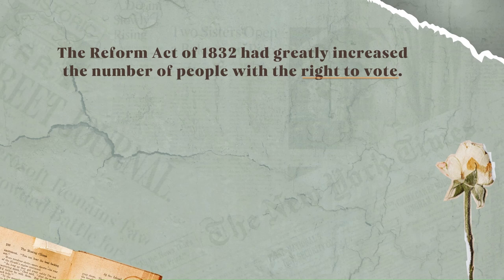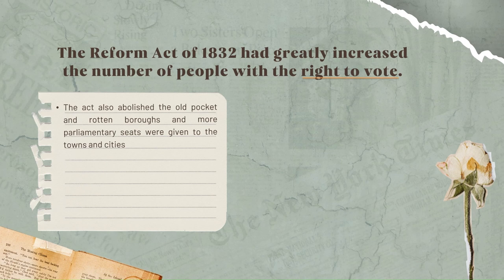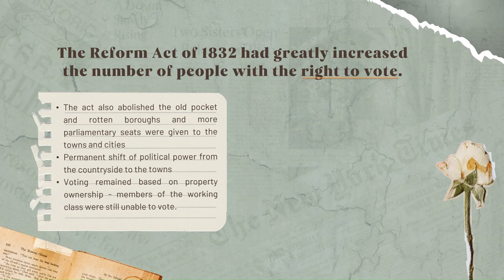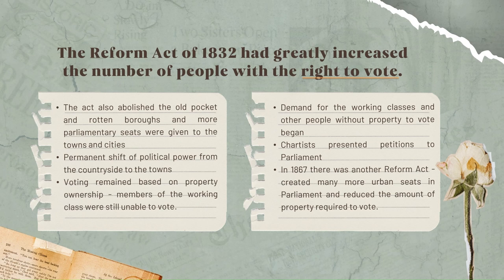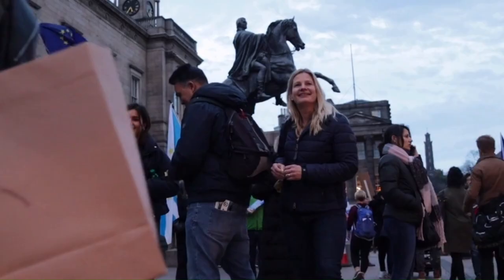The right to vote. As the middle classes in the wealthy industrial towns and cities grew in influence, they began to demand more political power. The Reform Act of 1832 greatly increased the number of people with the right to vote. The Act also abolished the old pocket and rotten boroughs, and more parliamentary seats were given to the towns and cities. There was a permanent shift of political power from the countryside to the towns, but voting was still based on ownership of property, meaning members of the working class were still unable to vote. A movement began to demand the vote for the working classes and other people without property. Campaigners called the Chartists presented petitions to Parliament. In 1867 there was another Reform Act, which created many more urban seats in Parliament and reduced the amount of property people needed to have before they could vote.